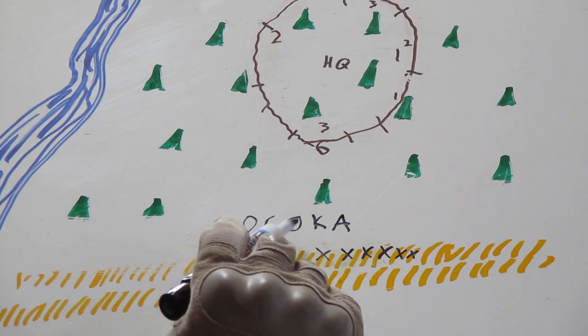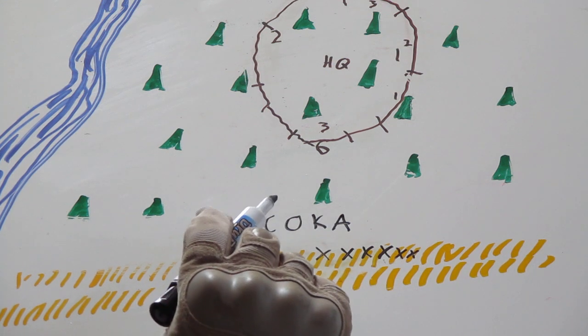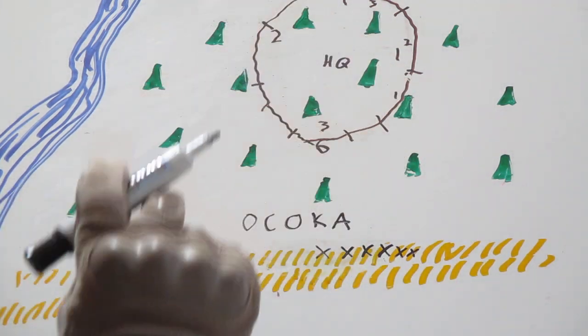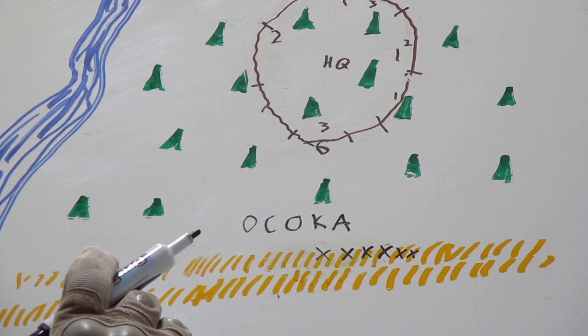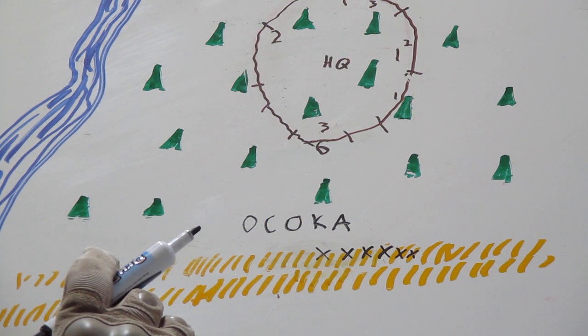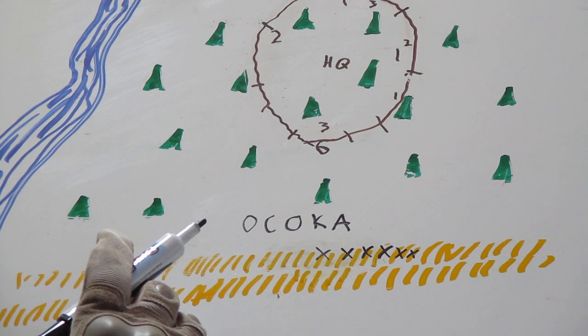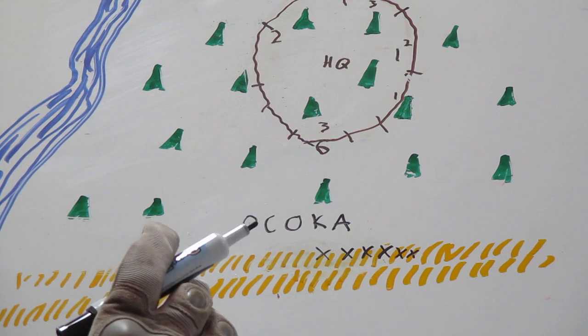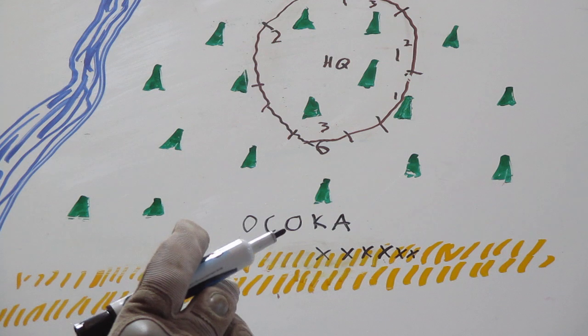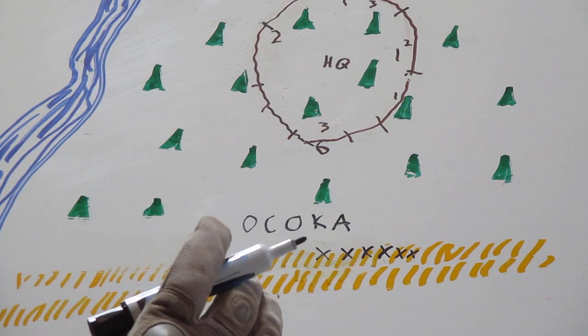The answers to each of those letters determines how your perimeter is going to be set up, where you're going to locate your key weapon systems like your machine guns, grenade launchers, mortars, recoilless rifles, whatever you have.